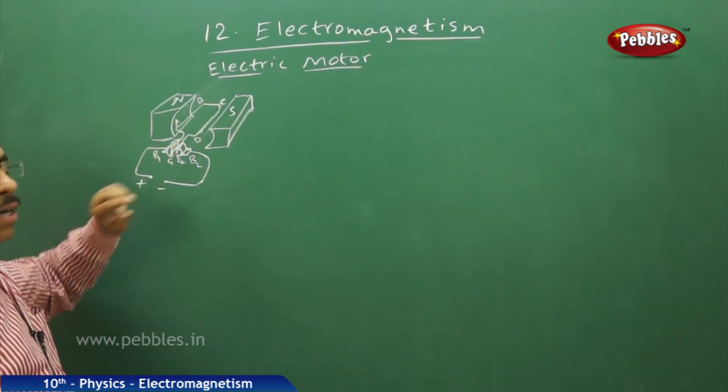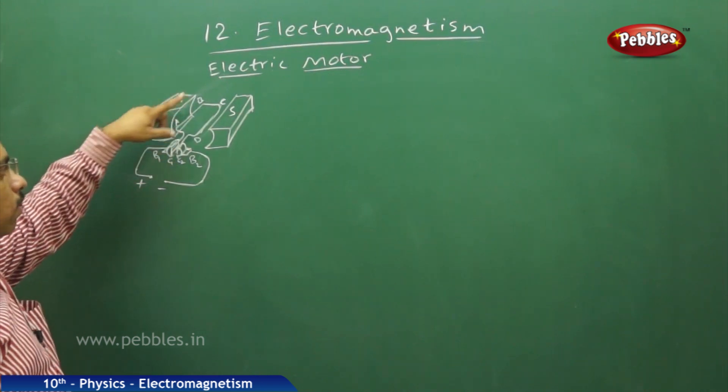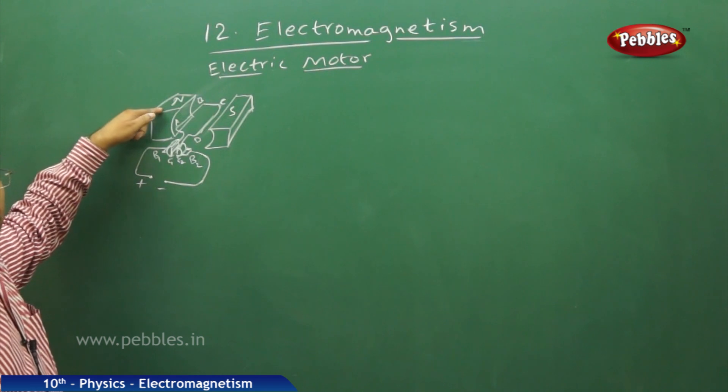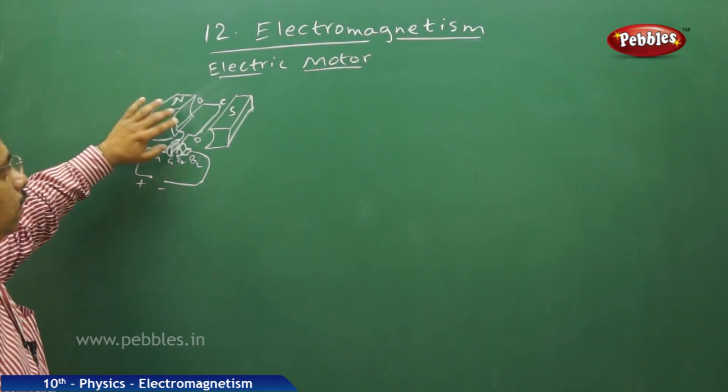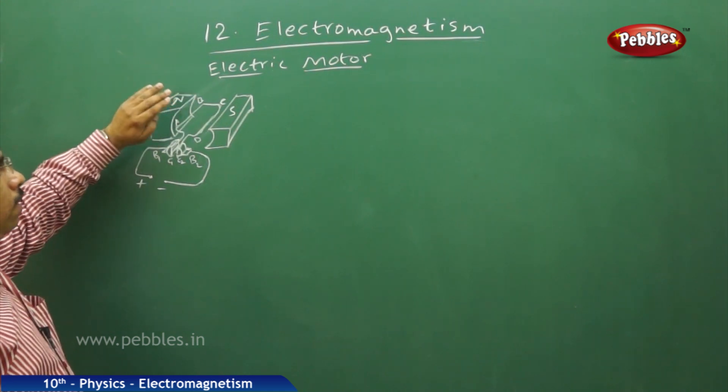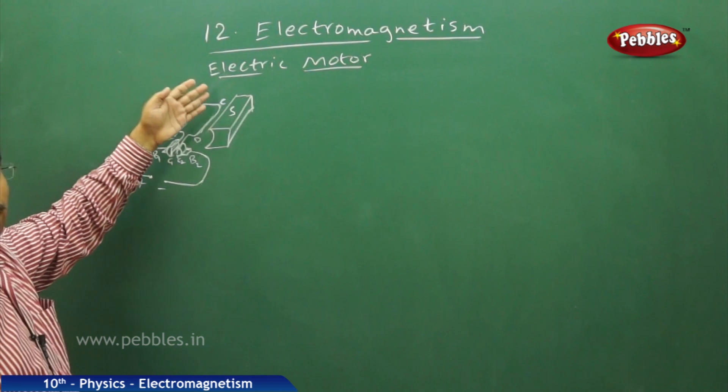When a south pole is created, what will happen? This south pole is created because of the current through the coil over here. It will be attracted towards this north pole. There is a motion. The AB part of the coil will turn down, will go down and CD part of the coil will go up.